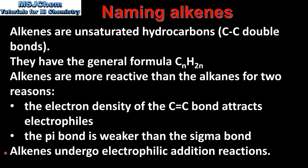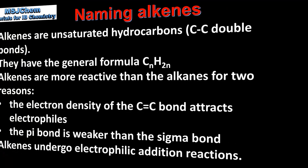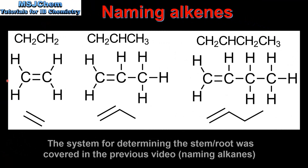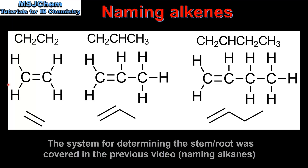These are covered in more detail in a later video. When naming alkenes, the first step is to count the longest carbon chain that contains the carbon to carbon double bond — this gives the root or stem of the name. Next, the suffix -ene is attached to the stem.